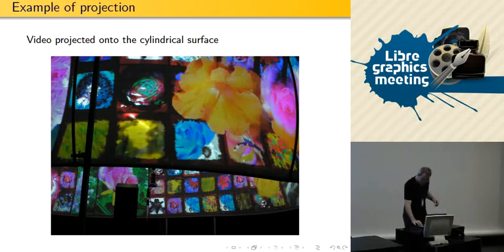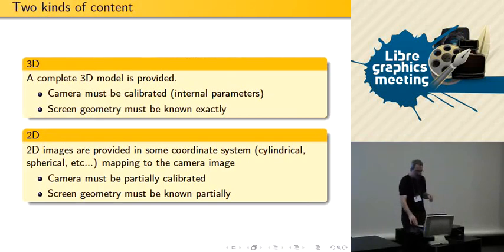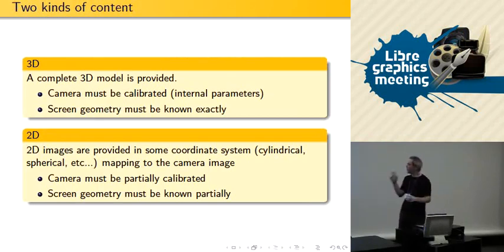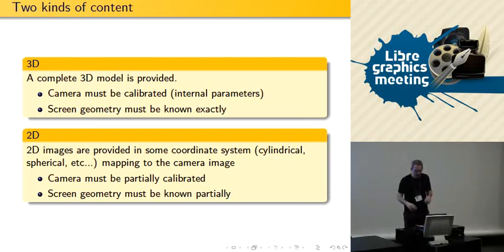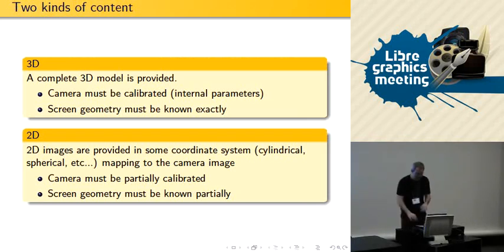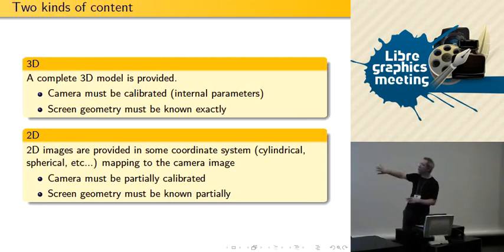This is what it looks like when you project images. There are two kinds of content: 3D stuff and 2D stuff. That covers pretty much everything that people want to do.